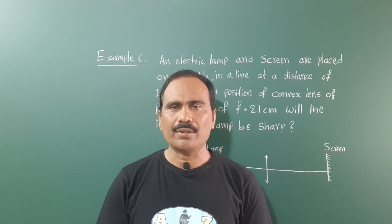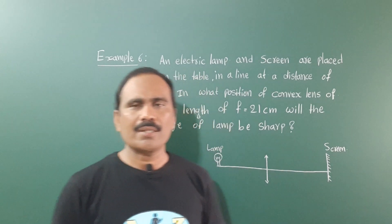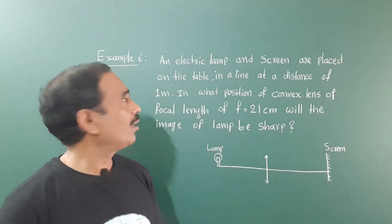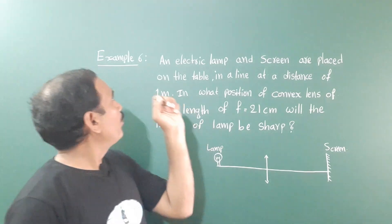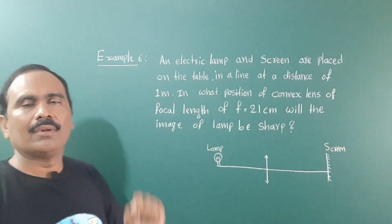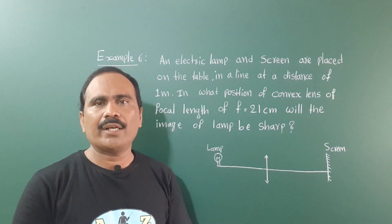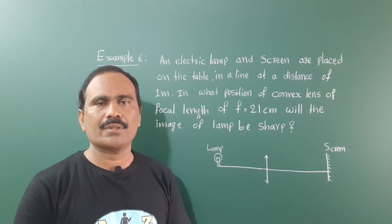Welcome to A to Z Classroom. Today's class is Example 6, a problem on refraction of light at curved surfaces.